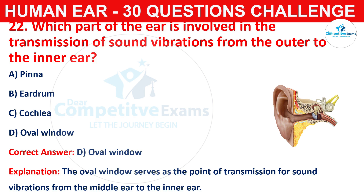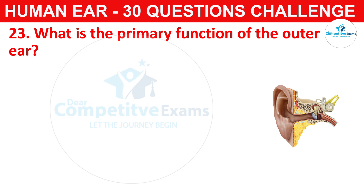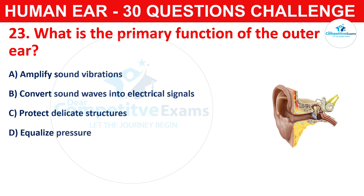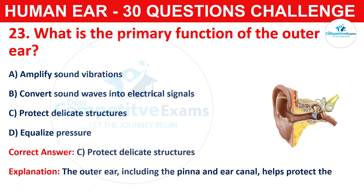Question number twenty-three: what is the primary function of the outer ear? Your options are amplify sound vibrations, convert sound waves into electrical signals, protect delicate structures, or equalize pressure. The correct answer is C, that is protect delicate structures. The outer ear, including the pinna and ear canal, helps to protect the delicate structures of the middle and inner ear.